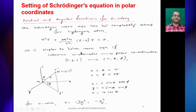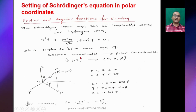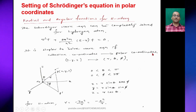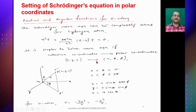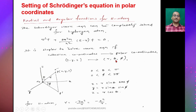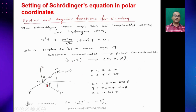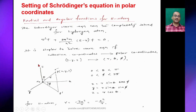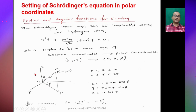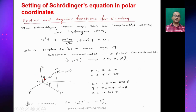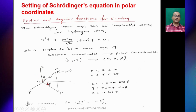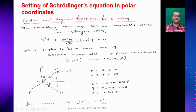It is simpler to solve the wave equation if the Cartesian coordinates are converted to polar coordinates. So x, y, z can be converted into polar coordinates r, θ, and φ. Here you can see the x-axis, y-axis, and z-axis, where this angle is θ and this angle is φ.